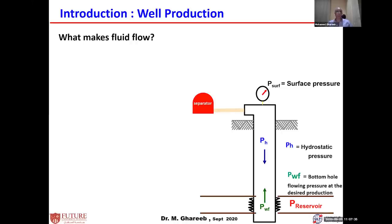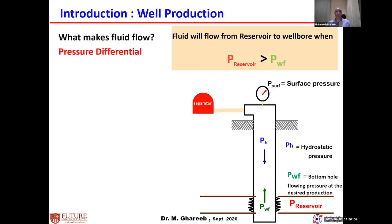Artificial lift usually deals with oil and gas wells, water wells, and so on. In order to understand artificial lift, we need to understand the flow of the well. What makes fluid flow from one point to another? It is differential pressure. Flow goes to the low pressure side. Fluid flows from the reservoir to the wellbore because the far reservoir pressure is higher than the bottom hole flow pressure.